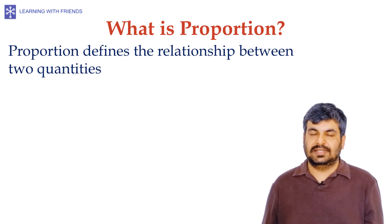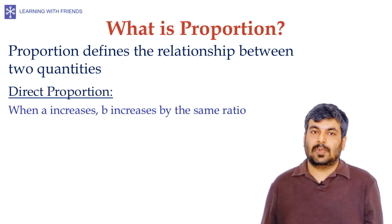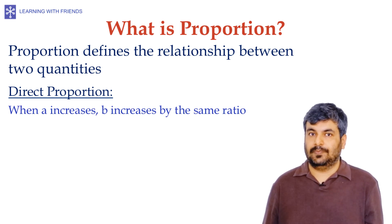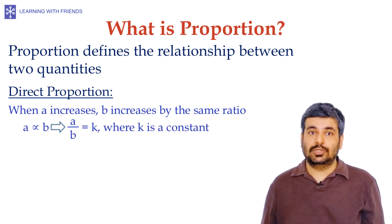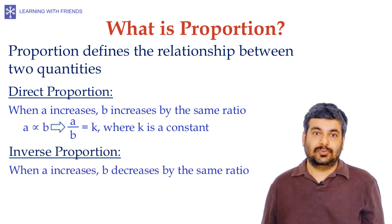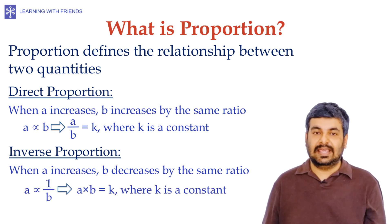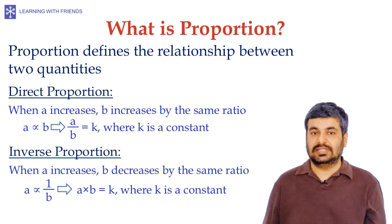Let's now look at a related concept: proportion. Proportion defines a relationship between two quantities — it can be direct or inverse. In direct proportion, when A increases, B increases by the same ratio, so A/B = constant k. In inverse proportion, when A increases, B decreases by the same ratio, so A × B = constant k.